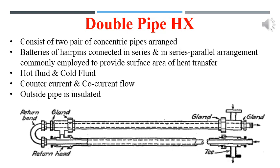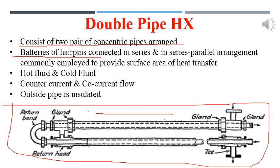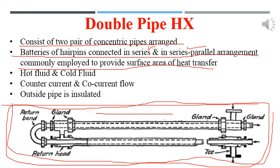The double pipe heat exchanger has several mechanical components. The main parts are nozzles, the return band, the gland, and the annulus. The return band helps pass the inner fluid to the second leg of the hairpin. The unit — a single hairpin — looks like a hairpin shape. More hairpins are required when larger heat transfer area or larger heat transfer services are needed.